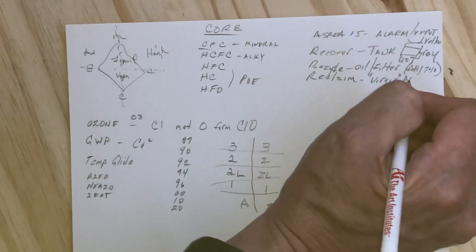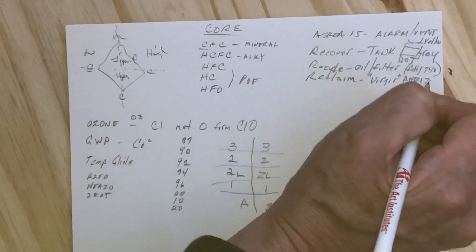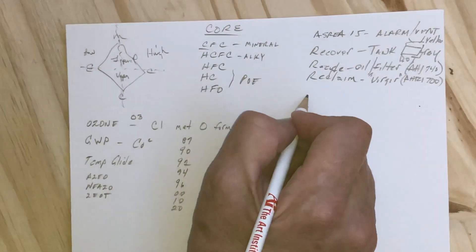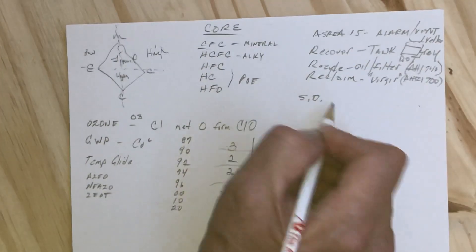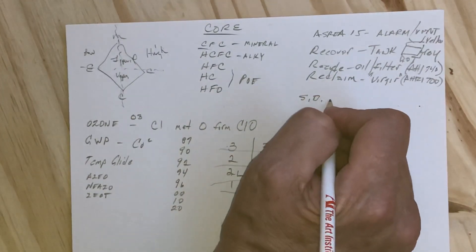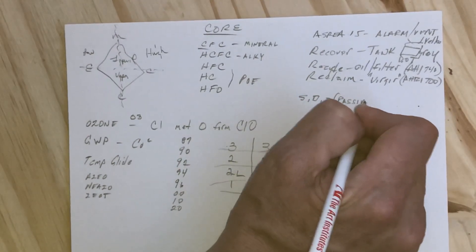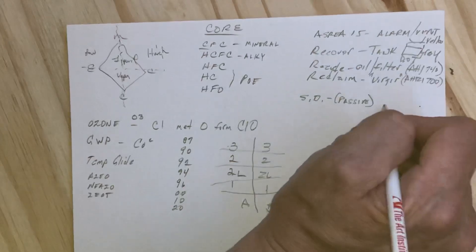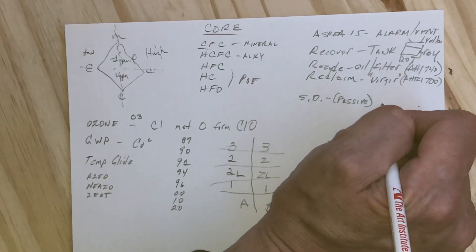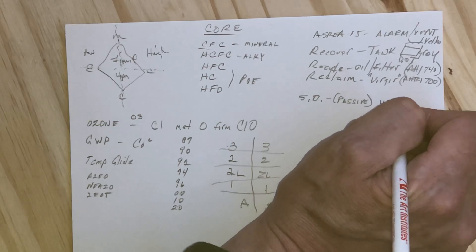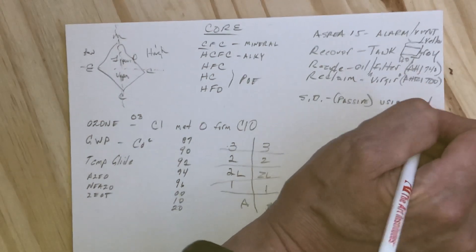A couple things about the types of recovery equipment: you've got system-dependent process, which is more of a passive way of doing things, using the system's pressure or compressor if it's running to get the equipment recovered.